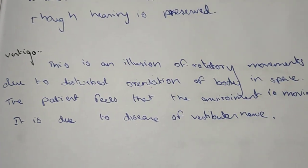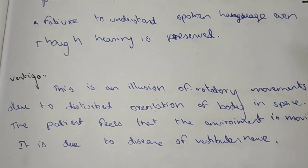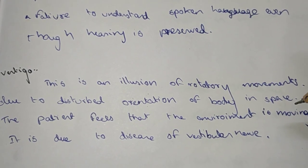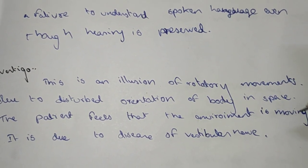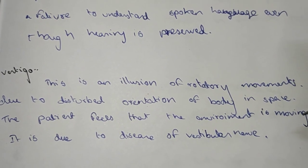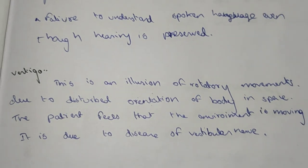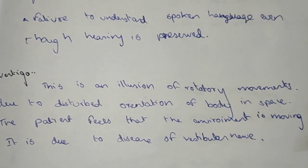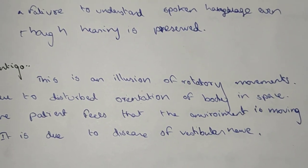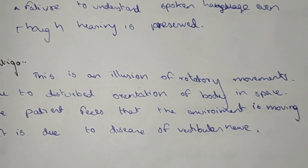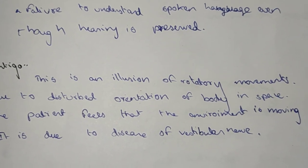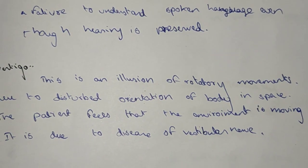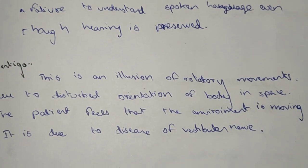Vertigo is the illusion of rotary movement due to disturbed orientation of the body in space. The patient feels like the environment is moving. This disease is due to the vestibular nerve — any disease in the vestibular nerve causes vertigo. There will be a sensation of rotatory motion of the environment, but the rotary movement is not actually present.